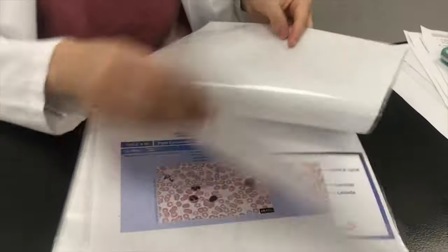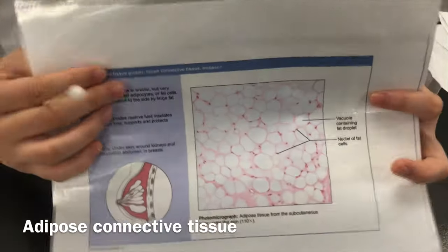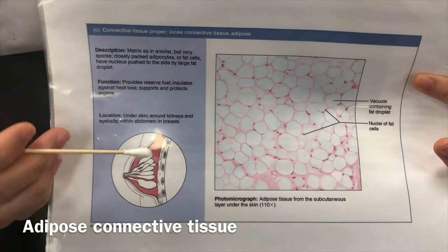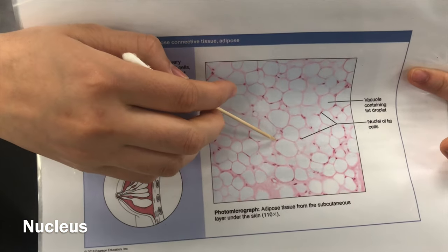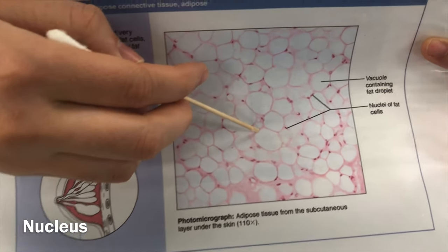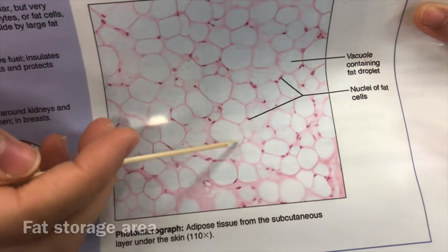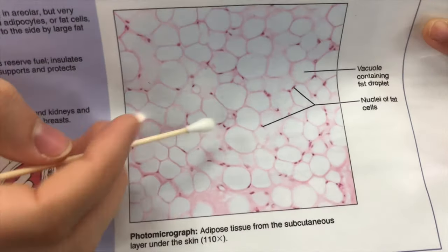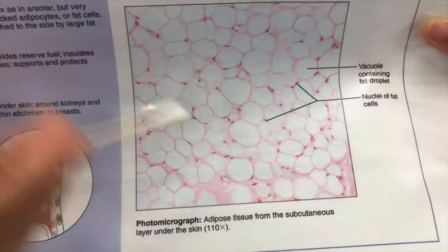Next is adipose tissue, a type of connective tissue — essentially fat tissue. You can find it anywhere you find body fat. The nucleus is this little dark spot right here, with the plasma membrane on the outside, and all of the interior is your fat storage area. The fat storage takes up so much space that it pushes everything else to the outside, which is why the nucleus sits on the outer edge of the cell.